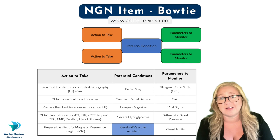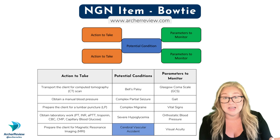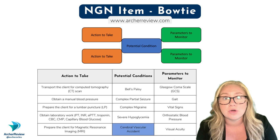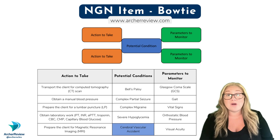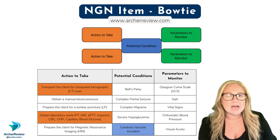Should we prepare her for an LP? That's not going to help us either. Should we get lab work? Yes — I especially want to check a glucose, because we know hypoglycemia can imitate a stroke and that could really help us out. Lastly, should I transport her to an MRI? No — I'm already getting a CT. Your last selection with a bow tie is what parameters you want to monitor to see if this condition is improving.